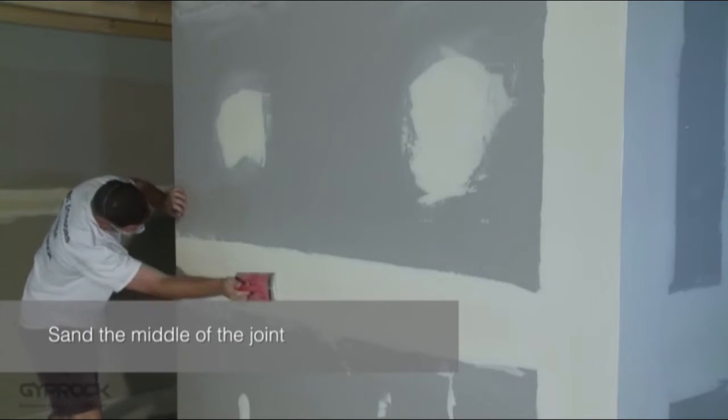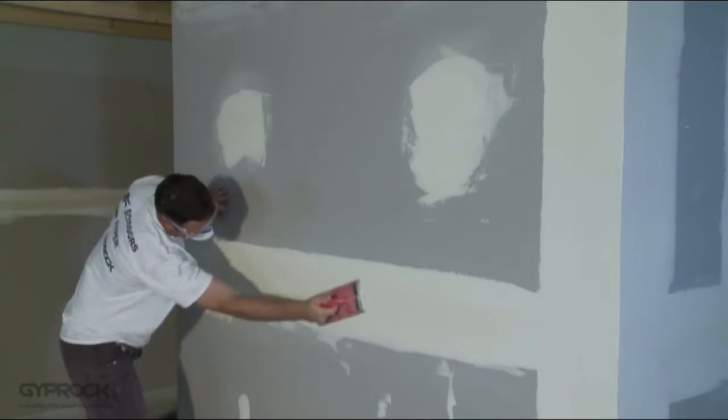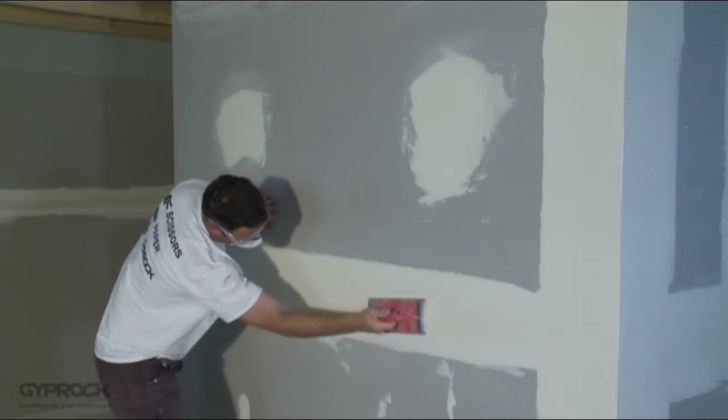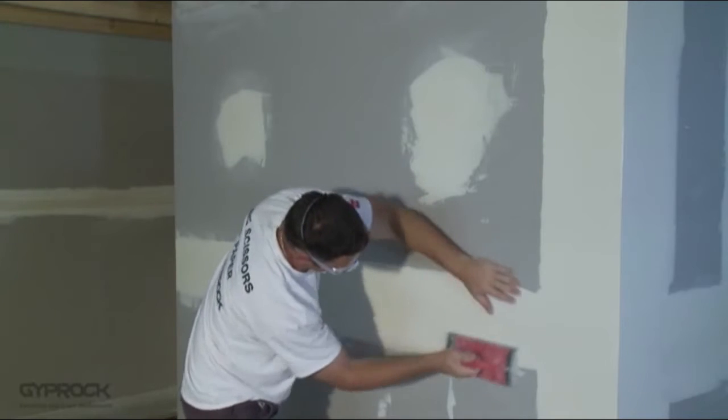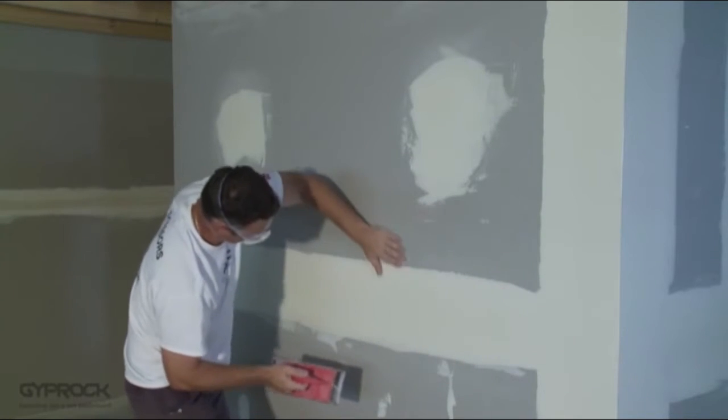Sand the middle of the joint lightly using a side-to-side motion with sandpaper on a float, or on the diagonal if using mesh, to avoid scratching the surface of the finish coat. After sanding, run your hand over each joint to check for any imperfections.